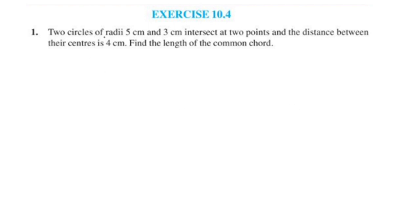Two circles of radii 5 cm and 3 cm intersect at 2 points, and the distance between their centers is 4 cm.